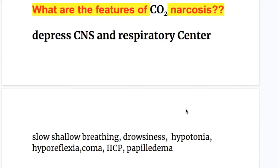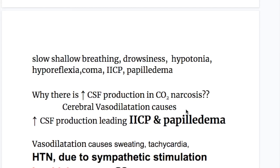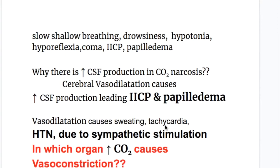What are the features of carbon dioxide narcosis? It depresses the CNS and the respiratory center. It causes slow, shallow breathing, drowsiness, hypotonia, hyporeflexia, coma, increased intracranial pressure, papilledema, and there is increased production of CSF.